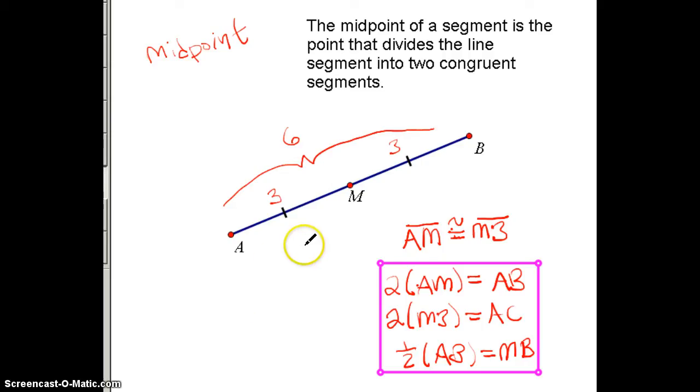And one other really important relationship you're going to have is that if M is the midpoint here, these parts are congruent, we know that. So we're always going to be able to say the length of that left piece, AM in this example, is equal to the length of that right piece, MB.